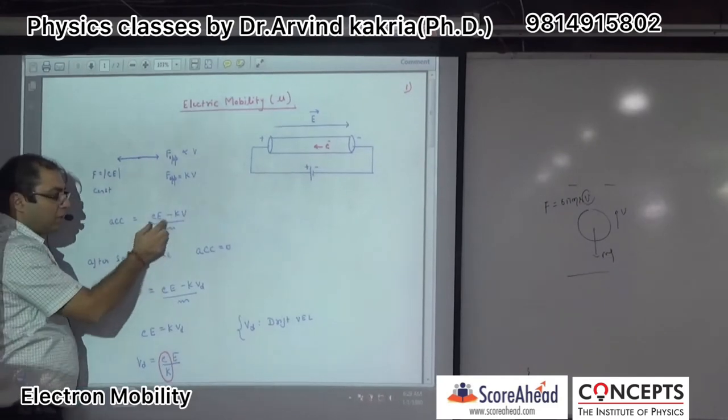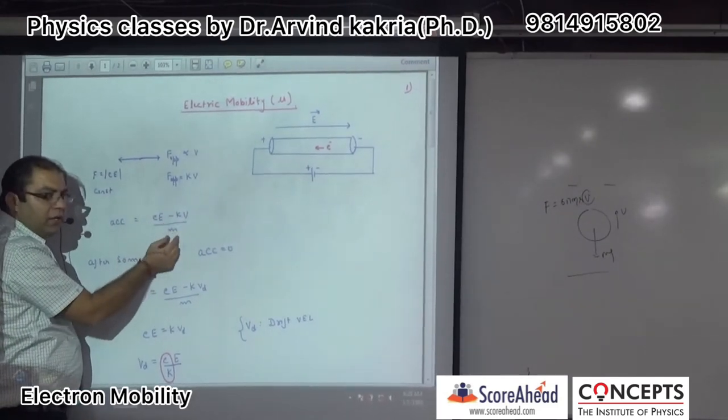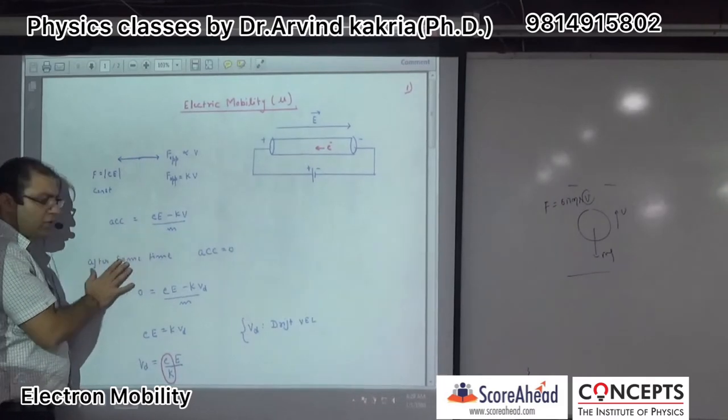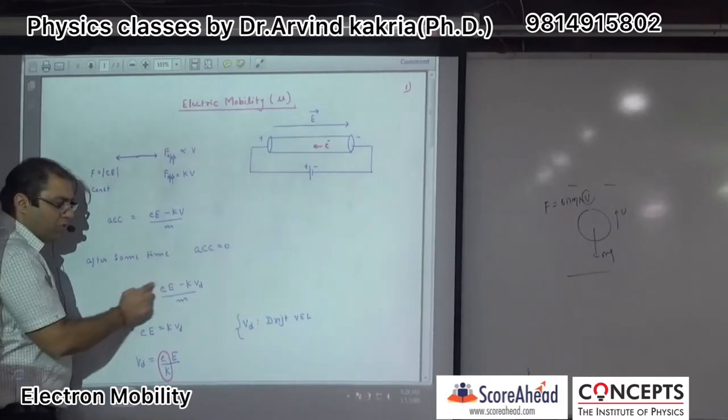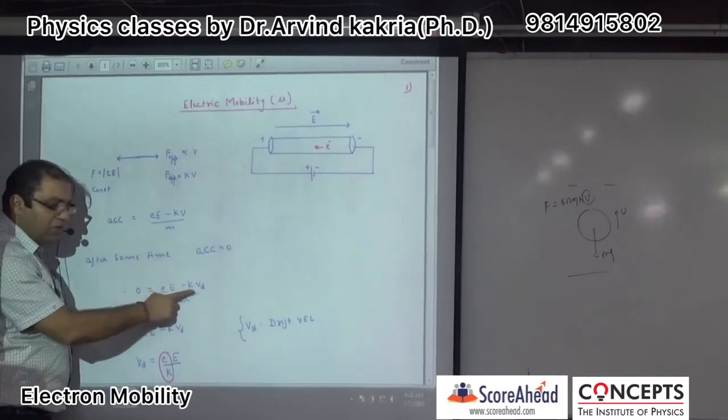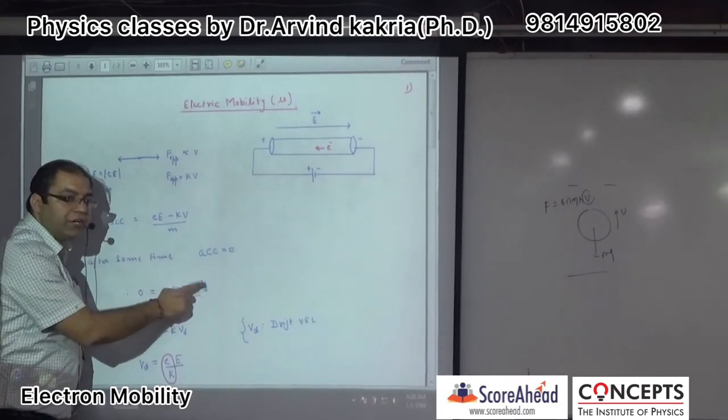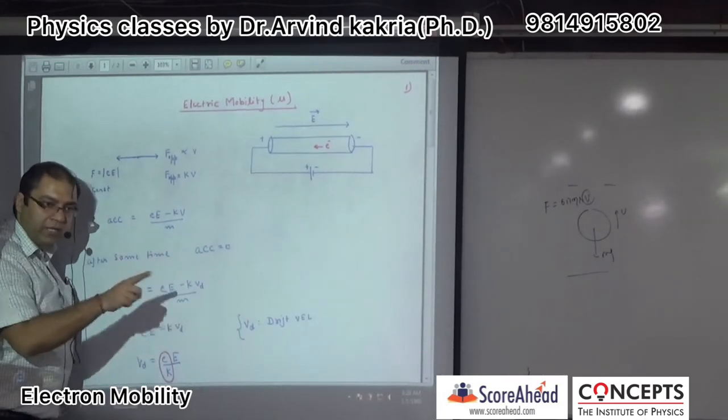At the beginning, there is acceleration because the electric force is bigger. After some time, acceleration becomes zero because the forces balance. The velocity becomes constant, and this constant velocity is called drift velocity, analogous to terminal velocity.